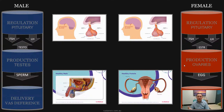The feedback hormone in men, produced by the testes, is testosterone. The feedback hormone for women, produced from the ovaries, is estradiol. Together, in concert, these hormones keep everything moving, resulting in the production of gametes — sperm and egg.